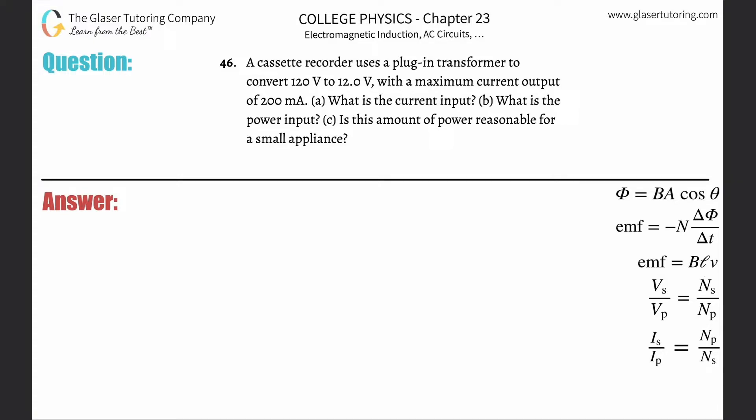Number 46, a cassette recorder uses a plug-in transformer to convert 120 volts to 12 volts with a maximum current output of 200 milliamps. Letter A, what is the current input?